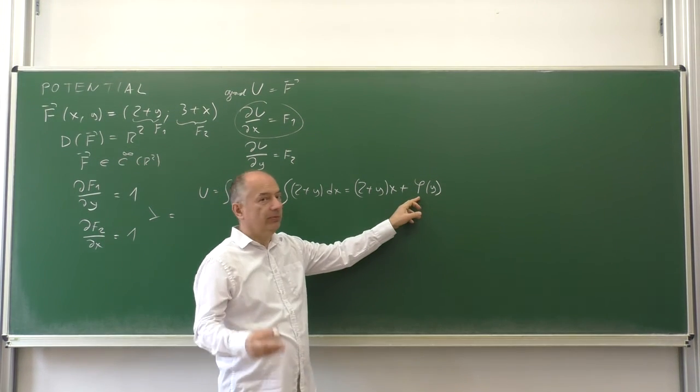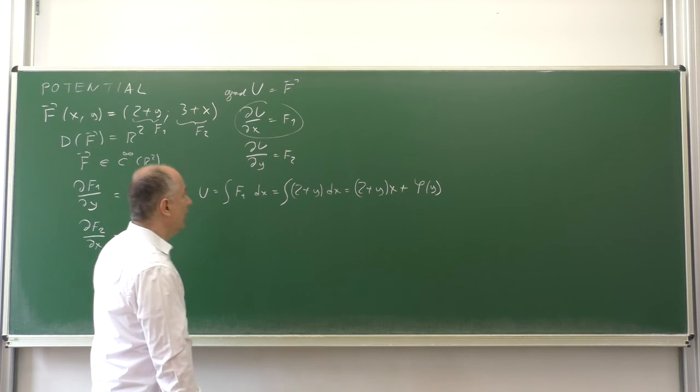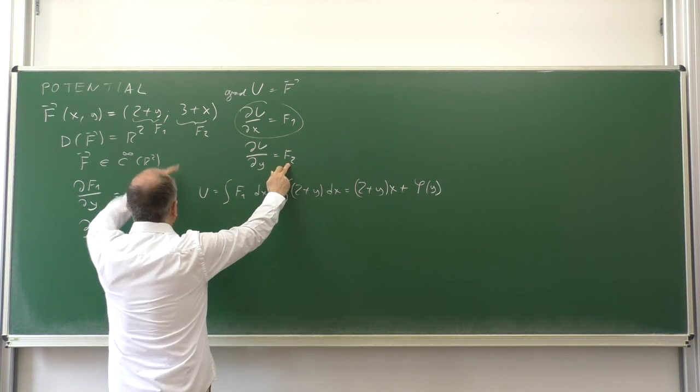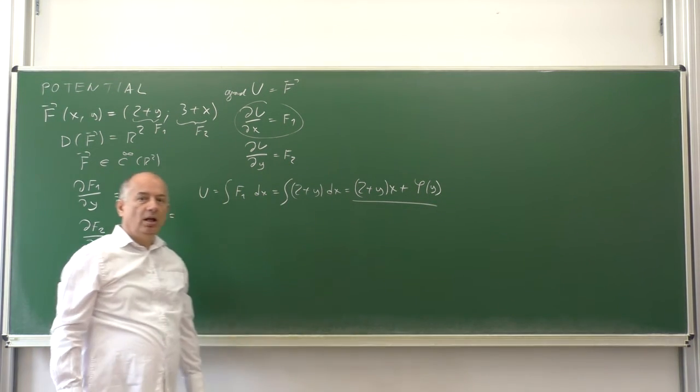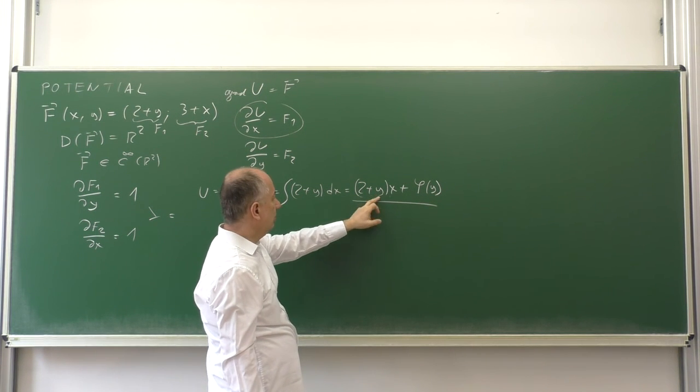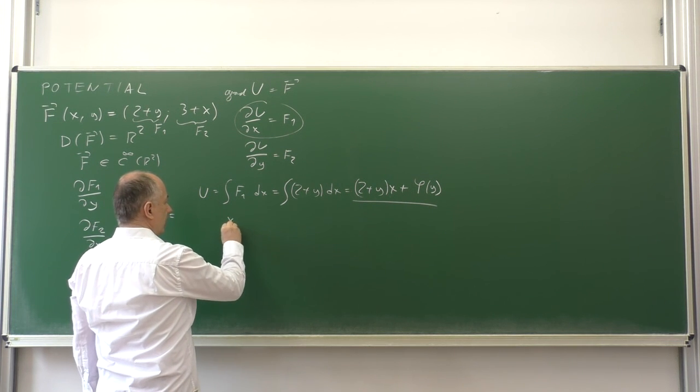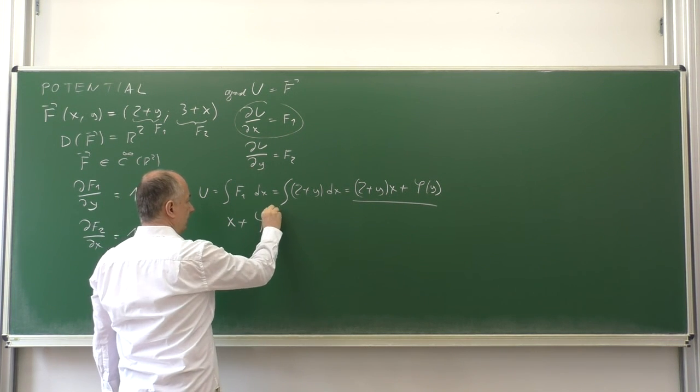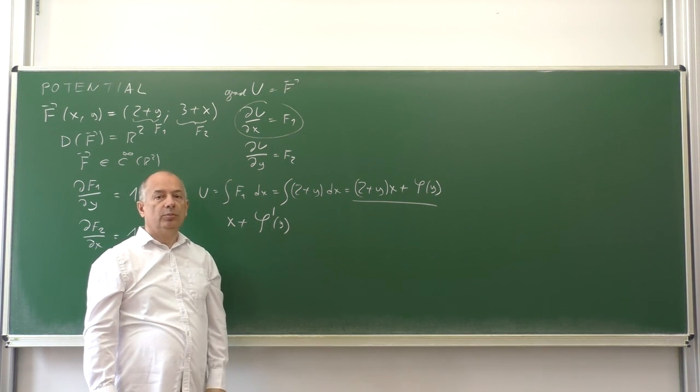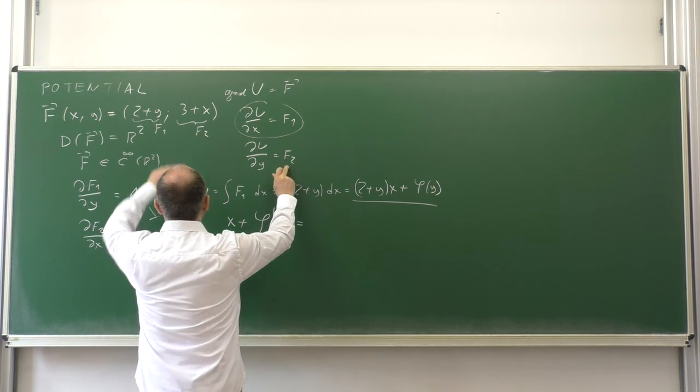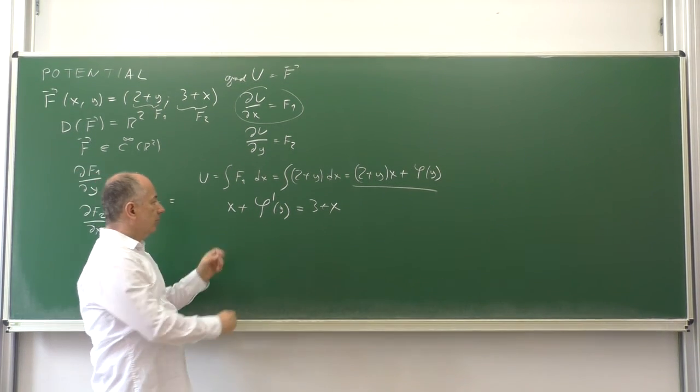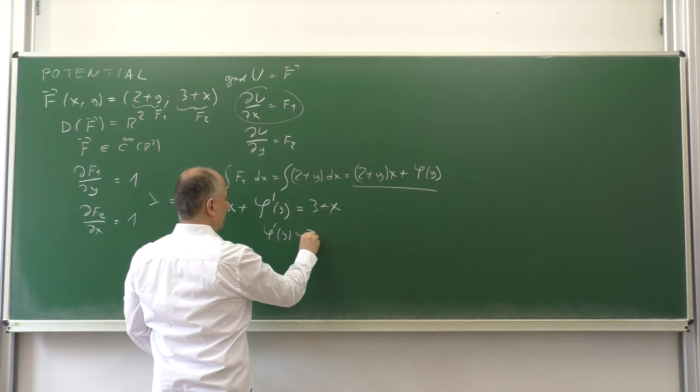How to find this non-constant function φ of y? We use the second equation. The partial derivative with respect to y should equal F2. Taking our result and differentiating with respect to y: 2x gives 0, xy differentiating with respect to y is x, plus φ is a function of one variable so we denote the derivative with prime. This should equal F2 which is 3 plus x. Subtracting x we have φ prime y equals 3.